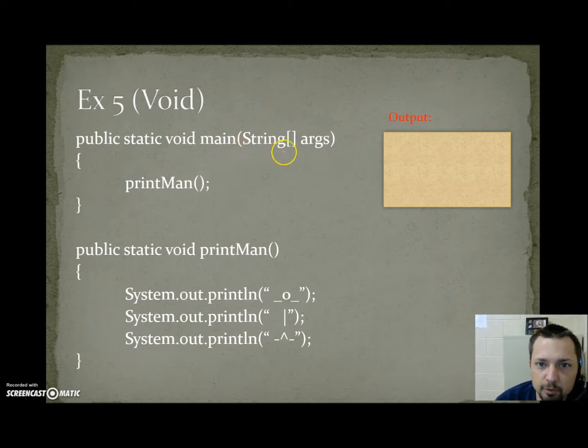So public static void main string bracket bracket args printman. Notice I'm not storing the result of printman, because the method is void. It is sending nothing back. So we go, we leave. Here's the method call. We leave main. We go to printman. We run the first line of code that prints underscore o underscore.